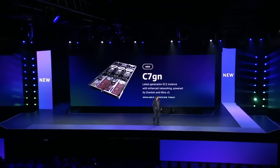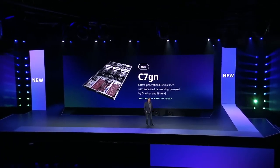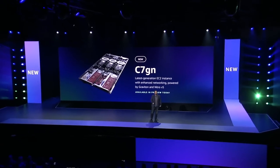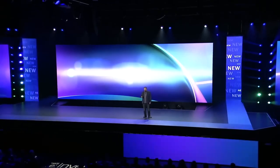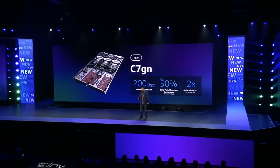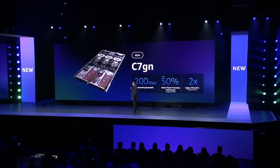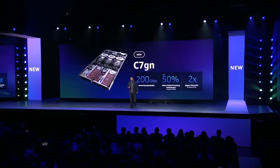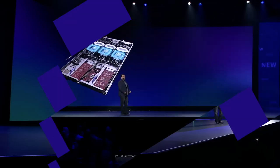The C7GN is a Graviton 3-based instance designed to deliver improved networking performance for the most network-intensive workloads. The C7GN will provide 200 gigabits per second of throughput and up to 50% higher packet processing performance over the previous generation C6GN, which was our last network-optimized instance.